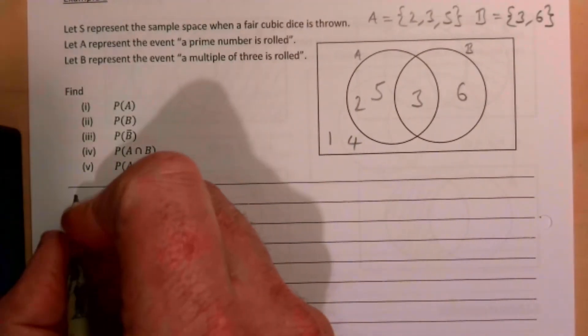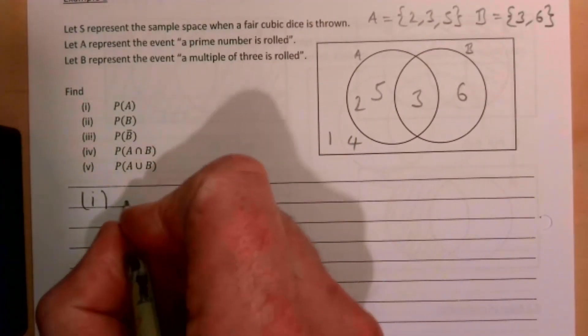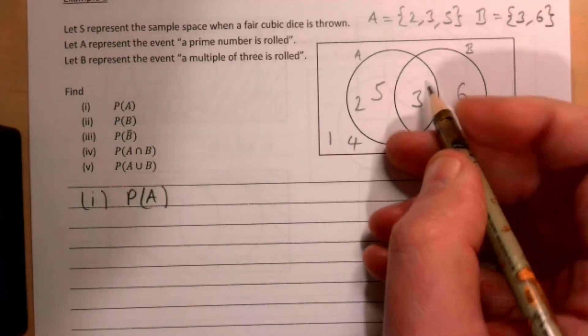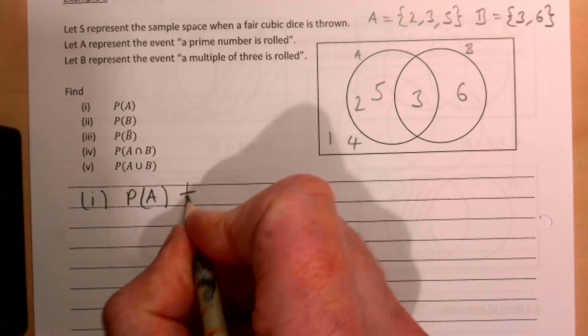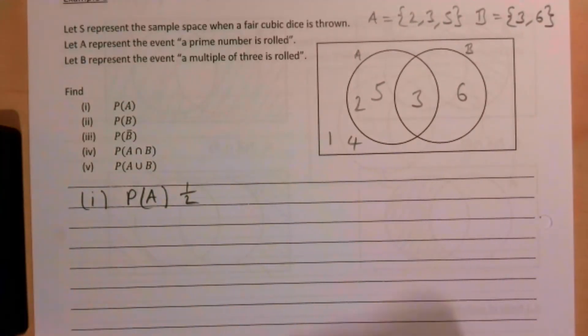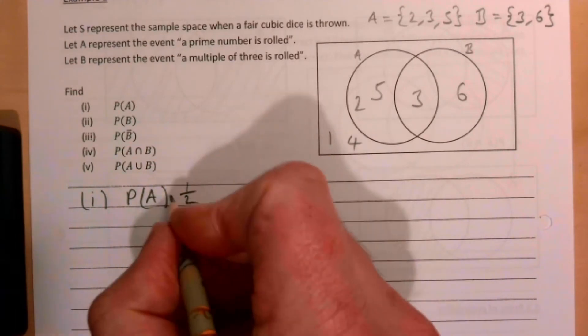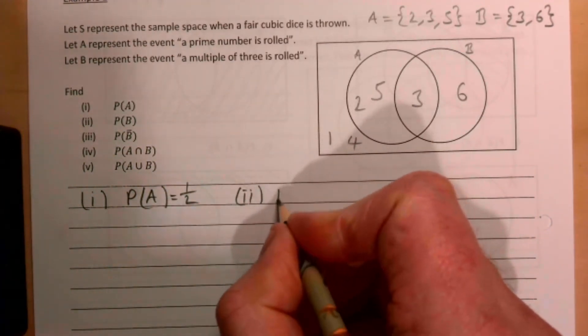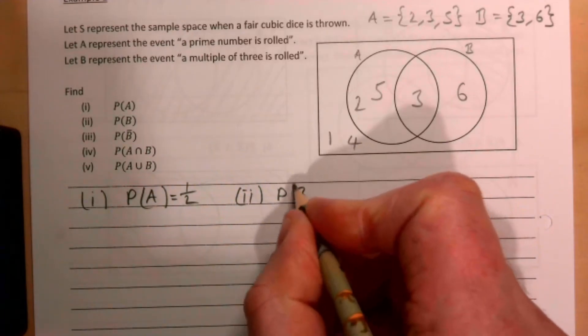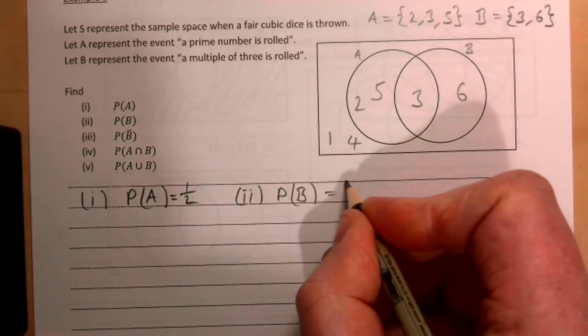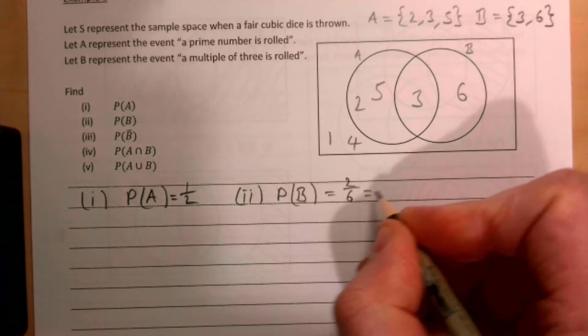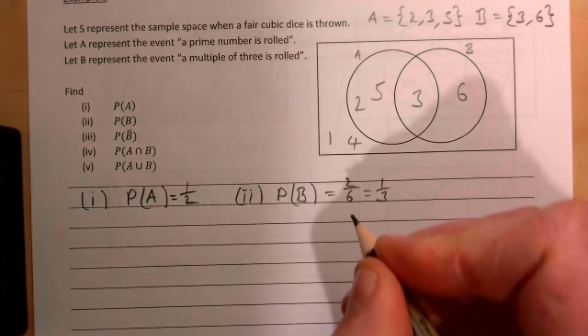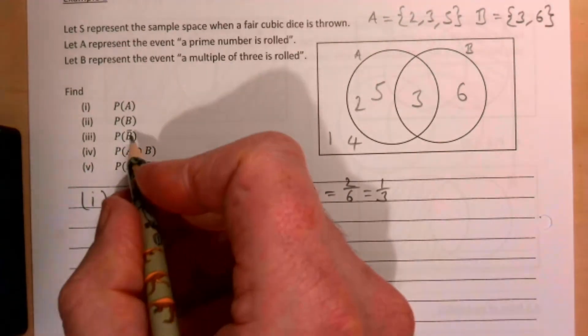So part one, they want the probability of A. We have 1, 2, 3 out of 6, so that's going to be a half. Part two, the probability of B is 2/6, which is a third.